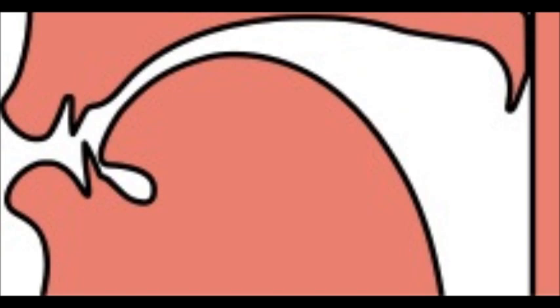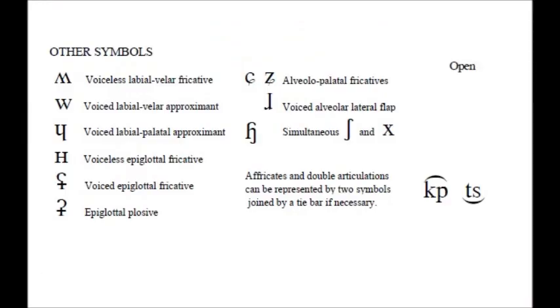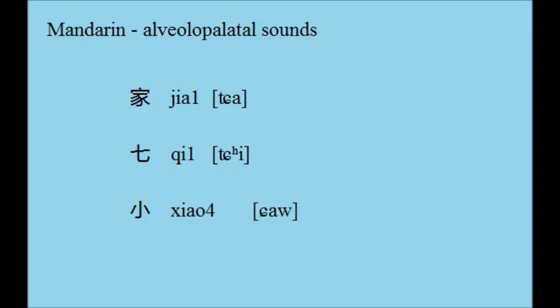Alveopalatal sounds combine two points of articulation. The tongue comes into contact with the alveolar ridge and the hard palate. These sounds are found in the other symbols section of the IPA chart. Neither English nor Korean has alveopalatal sounds, but they are found in Mandarin. Consider the following examples.